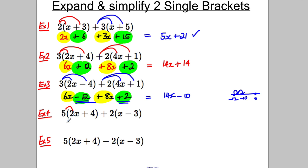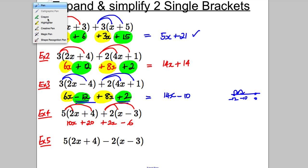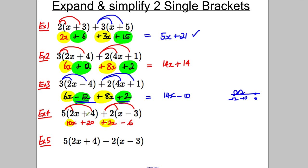Next one. 5 multiplied by 2x is 10x. 5 multiplied by positive 4 is positive 20. 2 multiplied by x is positive 2x. 2 multiplied by negative 3 is negative 6. So now we're going to combine 10x add 2x, and we're going to have positive 20 subtract 6. So we're going to have 10 add 2 is 12x, and 20 take away 6 is positive 14.